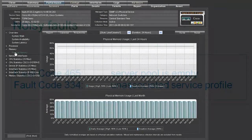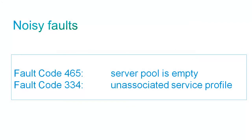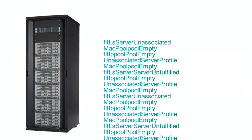Here are a couple of examples of faults created because of misconfiguration. The first fault, server pool is empty, occurs when an IP address pool does not contain any IP addresses. Remove the server pool or add a block of IP addresses. Fault code 334, unassociated service profile, means that the service profile has not been associated with a server or server pool. Check to see if there are faults from attempted associations and take action as necessary to correct the issue, or if the service profile isn't being used, remove it.